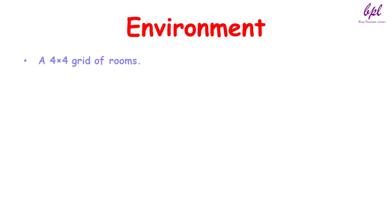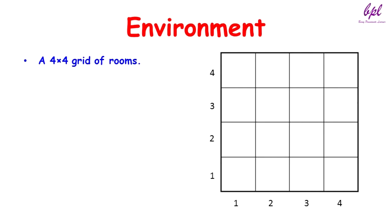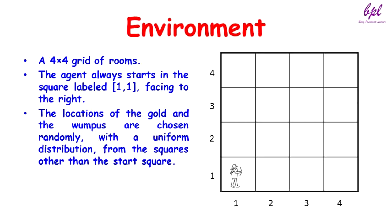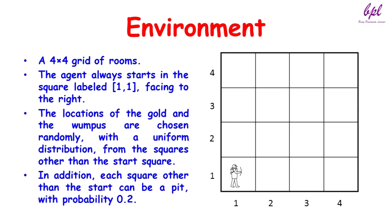Now let us see the environment. It is a 4x4 grid of rooms. Each room is numbered by its row and column. The agent always starts in the square labeled 1,1 facing to the right. The location of the gold and the Wumpus are chosen randomly with a uniform distribution from squares other than the start square. In addition, each square other than the start can be a pit with probability of 0.2.